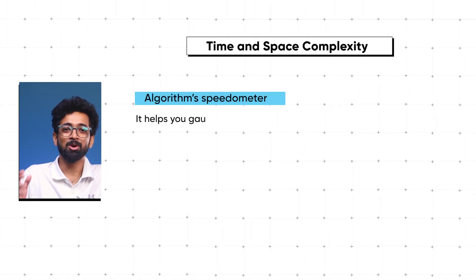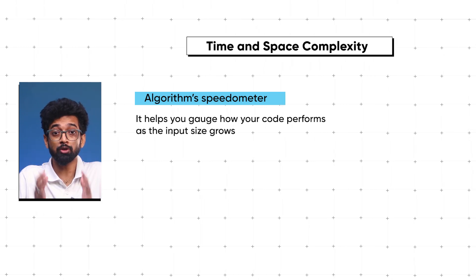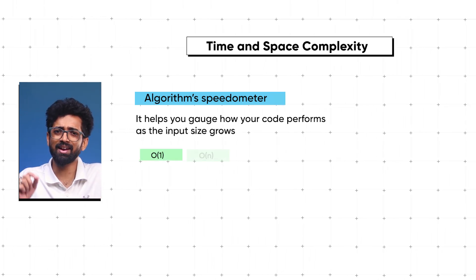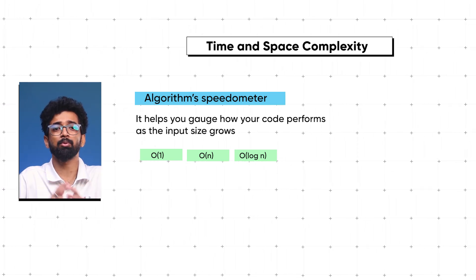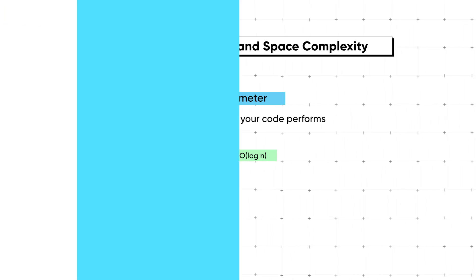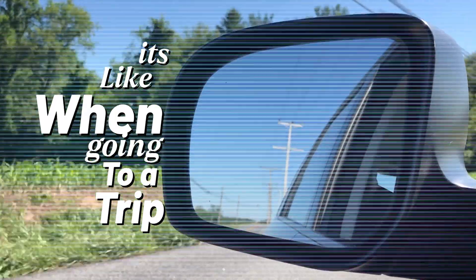Think of Big O notation as your algorithm speedometer — it helps you gauge how your code performs as the input size grows. You'll encounter terms like O(1), O(n), and O(log n). Knowing this will help you choose the right approach for different problems and understanding common complexities will help you pick the best solution for different scenarios.